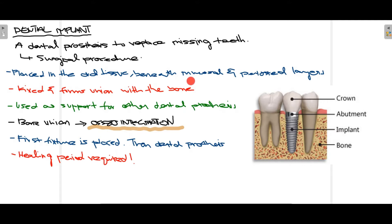The implant is placed in the oral tissue beneath the mucosa and periosteal layers. As you can see in this picture, it is placed below the soft tissue and inside the bone. When the dental implant is placed in the bone, it forms a union with the bone — a process known as osseointegration.